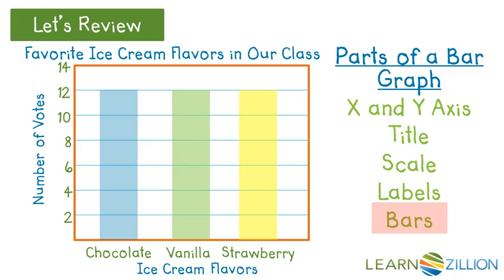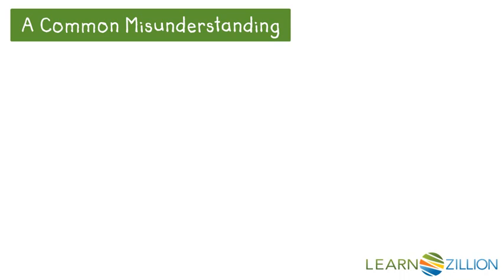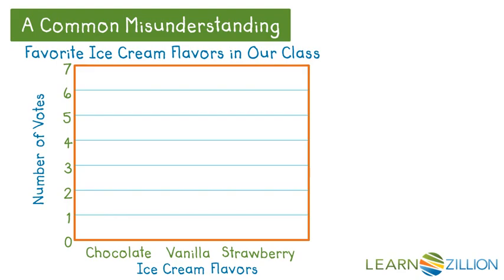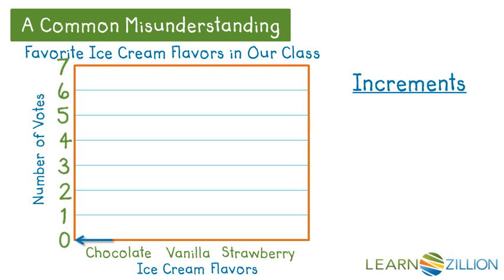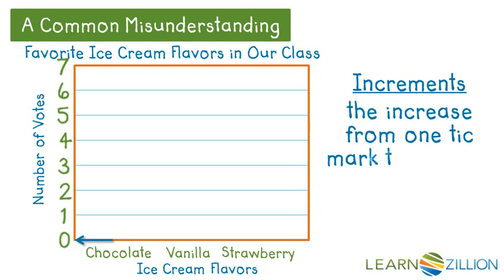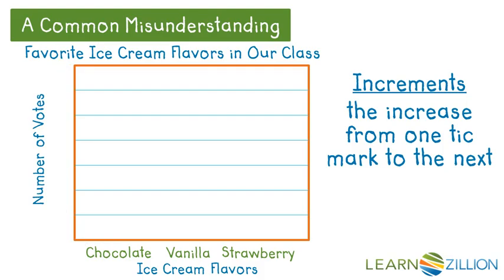A common misunderstanding when labeling and starting your bar graphs is in regards to the scale on the y axis — that is the vertical axis, the axis that goes up and down. If you take a look: 0, 1, 2, 3, 4, and so on. The common misunderstanding is about increments — the increase from one tick mark to the next. The tick marks are the lines in between.